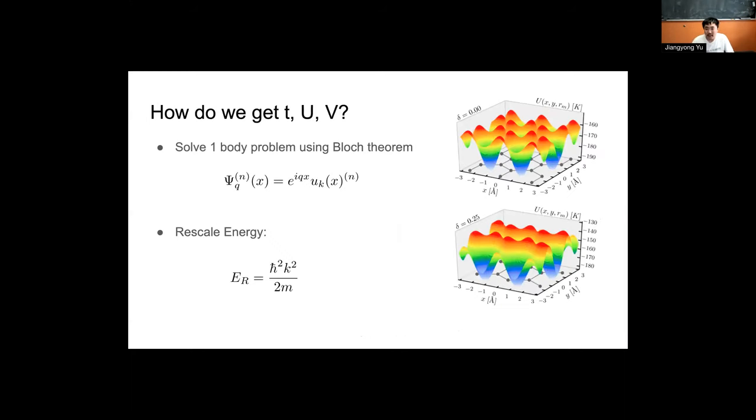How do we compute these three quantities? First of all, we do need some way to represent these helium atoms. What we're doing is we're pretty much solving the one-body problem using Bloch theorem, which assumes that the wave function is a product of some running wave and a periodic component.